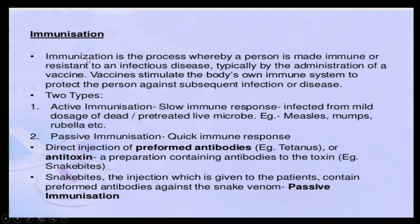Immunization is a process where a person is made immune by the introduction of a vaccine. The person is made resistant to an infectious disease by the administration of a vaccine. This vaccine stimulates the body's own immune system and protects the person from subsequent infections — when the same pathogen enters the body, it gives a faster response.